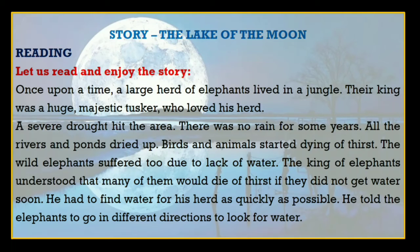Now let's read the story — The Lake of the Moon. Let us read and enjoy the story. Once upon a time, a large herd of elephants lived in a jungle. Their king was a huge majestic tusker who loved his herd. A severe drought hit the area. There was no rain for some years. All the rivers and ponds dried up. Birds and animals started dying of thirst.